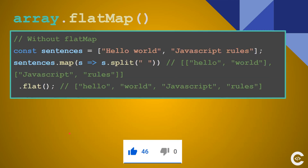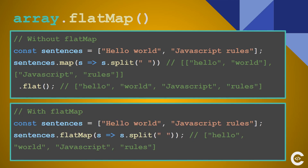flatMap is basically equivalent to executing map and then flat. The first block of code is equivalent to the second block. You can pause the video to understand this better.